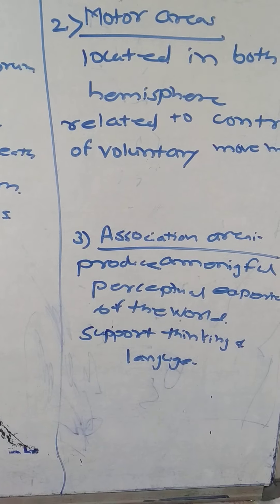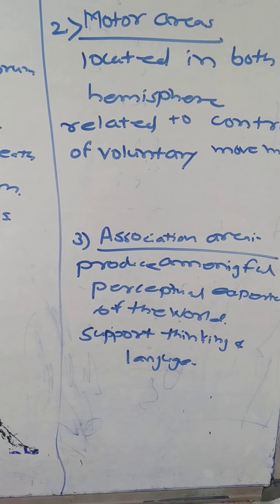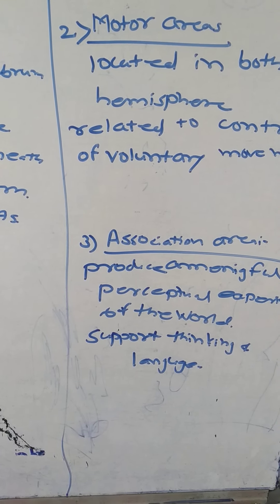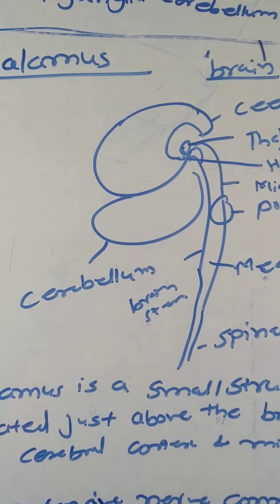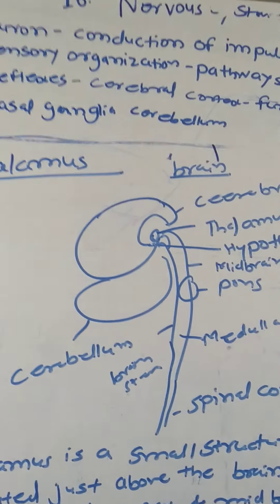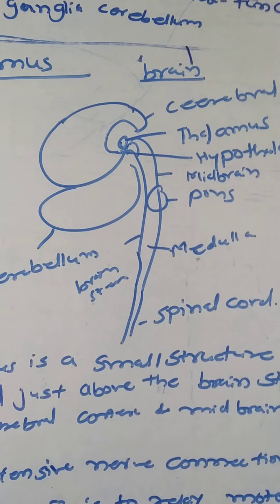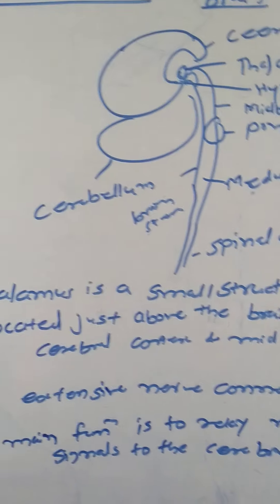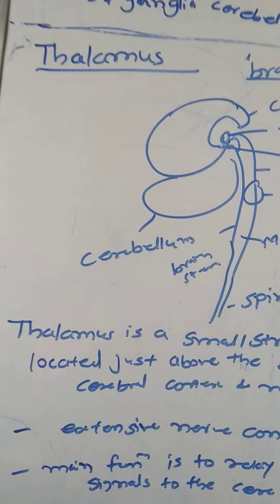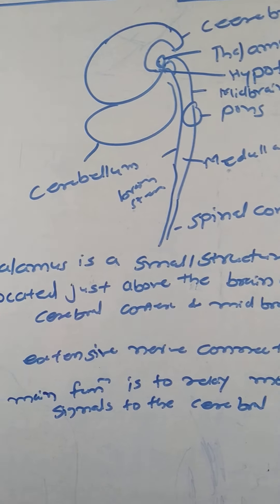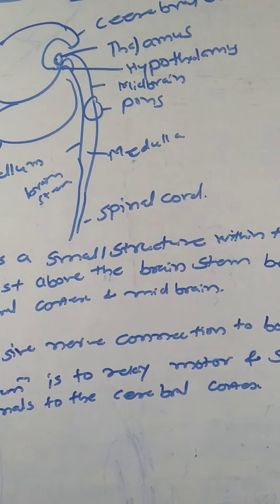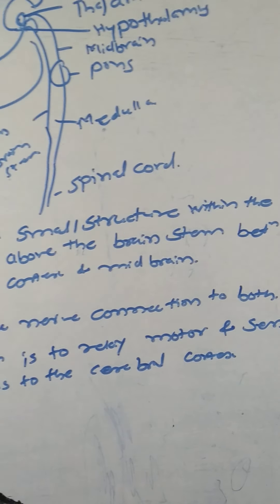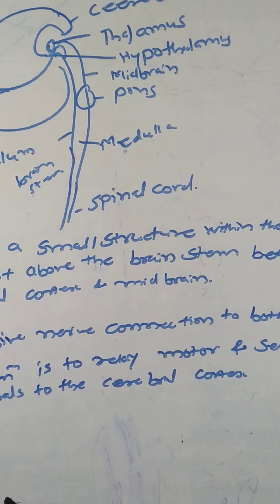The parietal, temporal, and occipital lobes, all located in the posterior part of the cortex, integrate sensory information and information stored in memory. Now we will learn about the thalamus of the brain. The thalamus is a small structure within the brain, located just above the brain stem, between the cerebral cortex and the midbrain. It has extensive nerve connections to both, and its main function is to relay motor and sensory signals to the cerebral cortex.